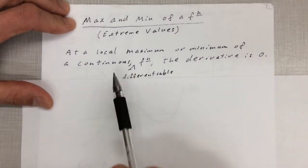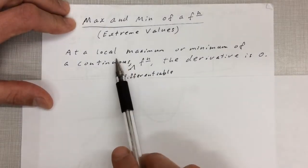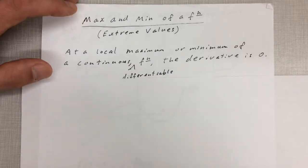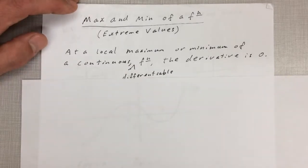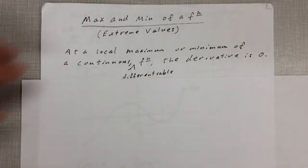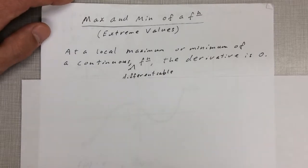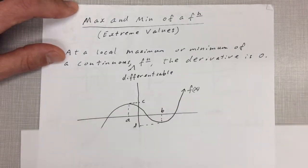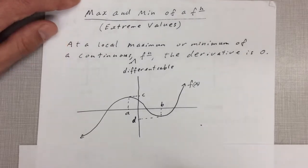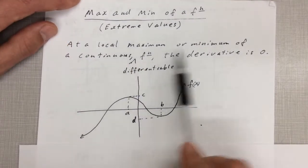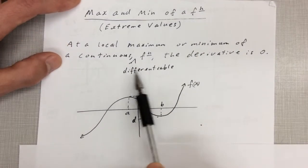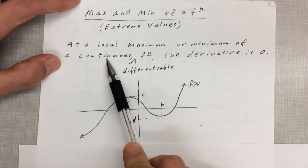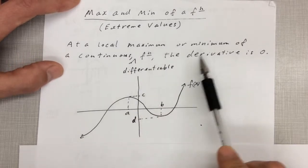A local max is really what we're talking about. An overall max — a global max — is the absolute maximum y value the function has. A local max is just within a small area. So a local maximum or minimum of a continuous differentiable (differentiable means smooth, continuous means connected) function is where the derivative is zero.